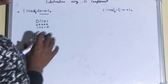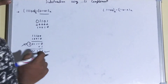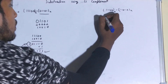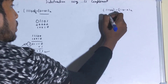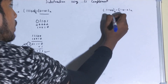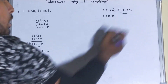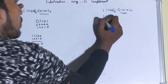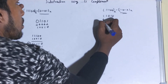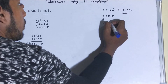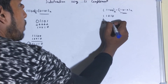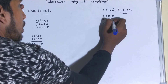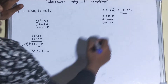Now let's start with the second question. The approach remains the same — the first thing we do is find the 1's complement of the number we are subtracting. So 1 becomes 0 and 0 becomes 1.